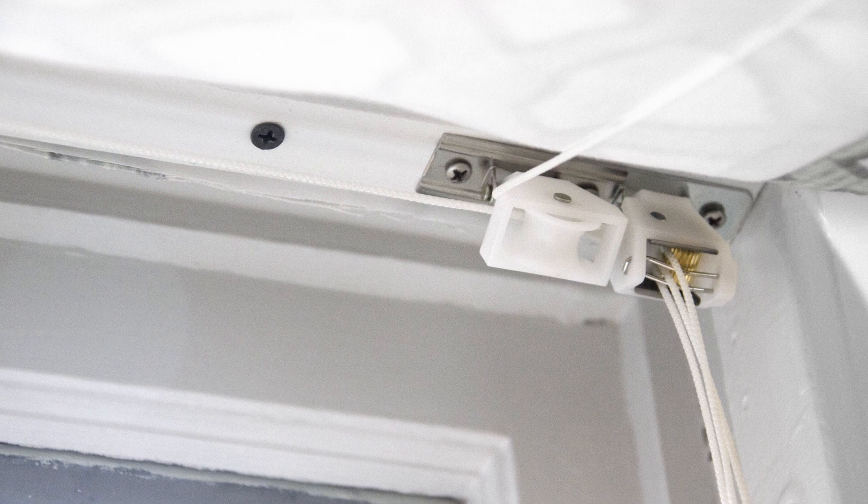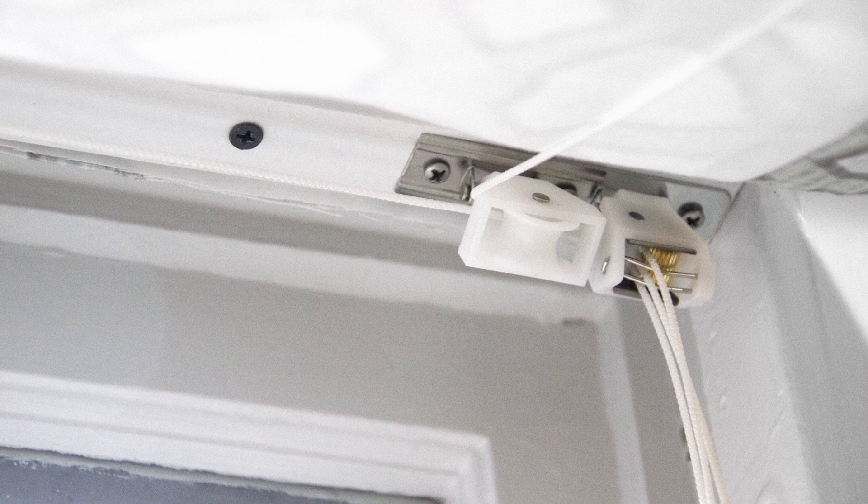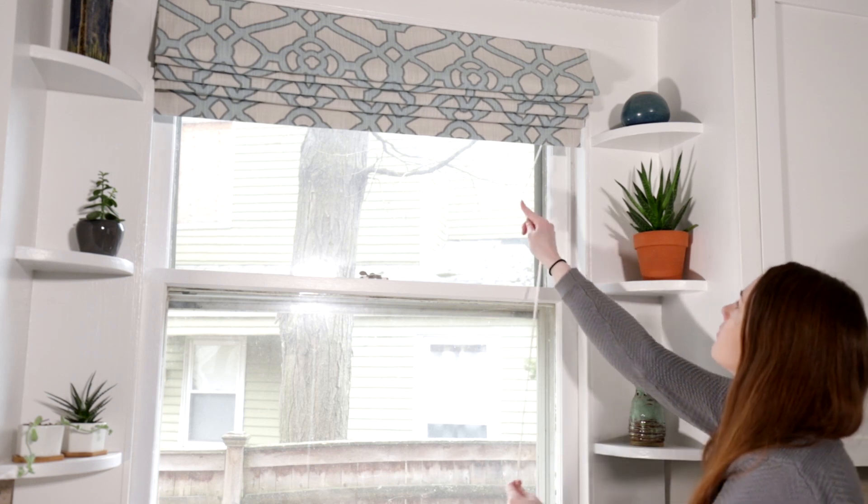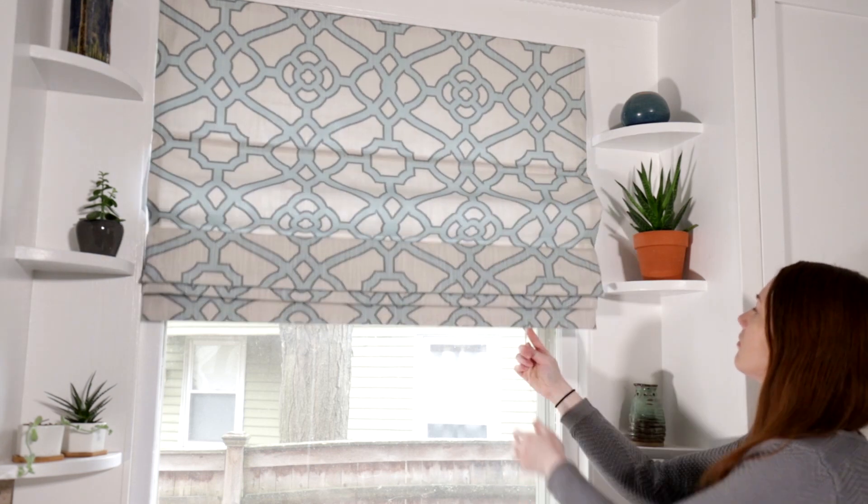Cord locks are used for blinds, roman shades, and similar window treatments. They're used to easily open and close the shade by gripping and releasing the cords.